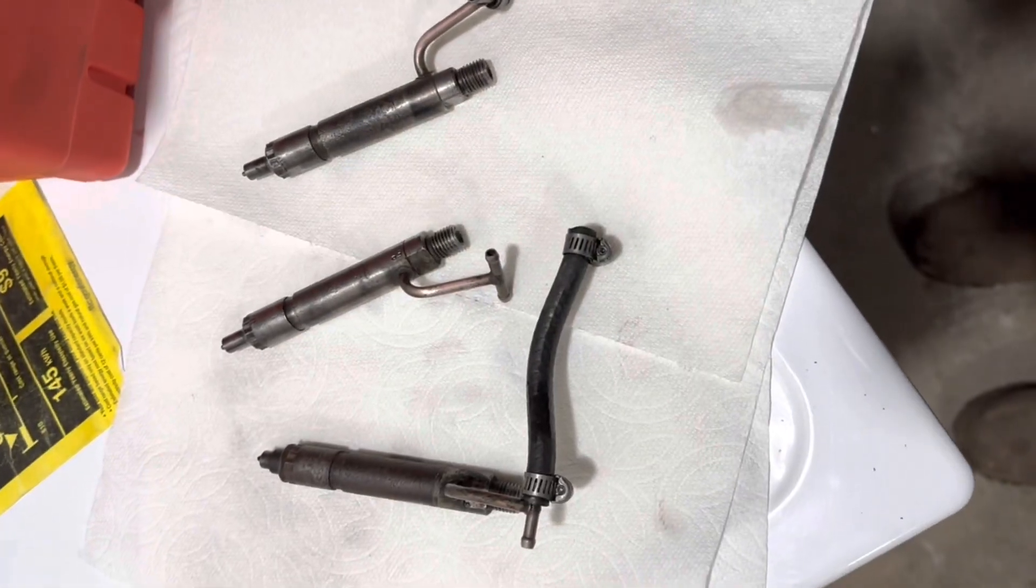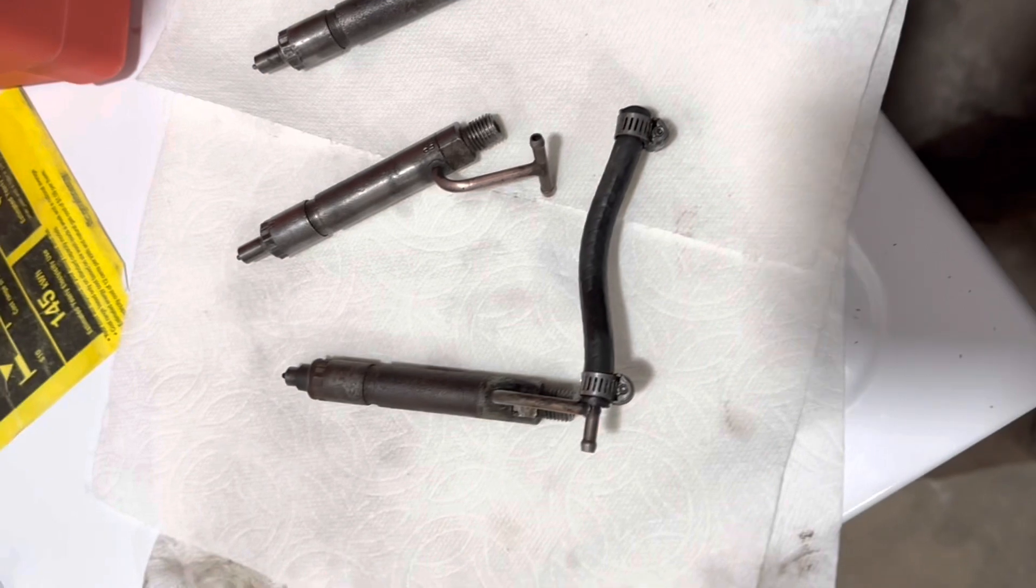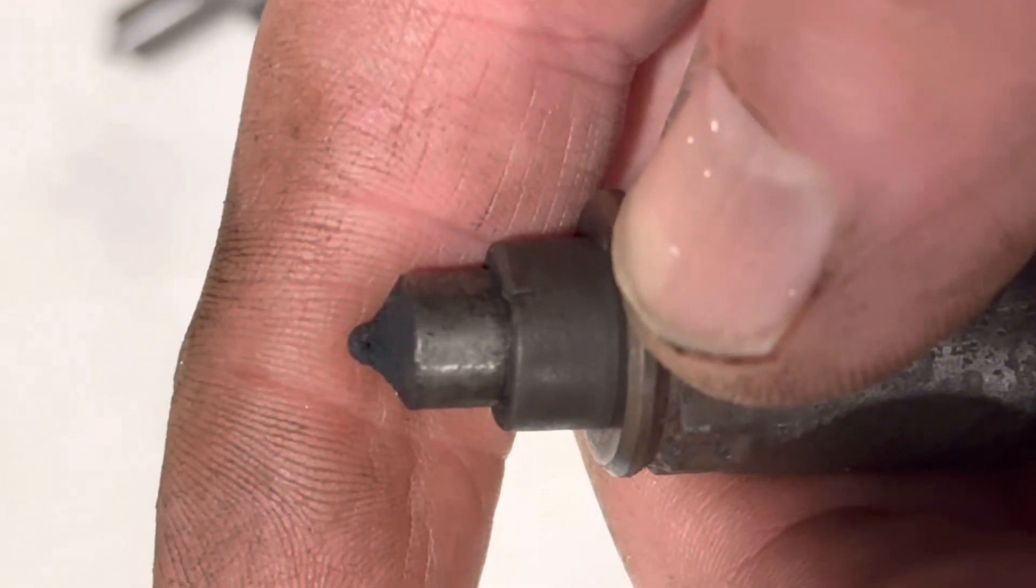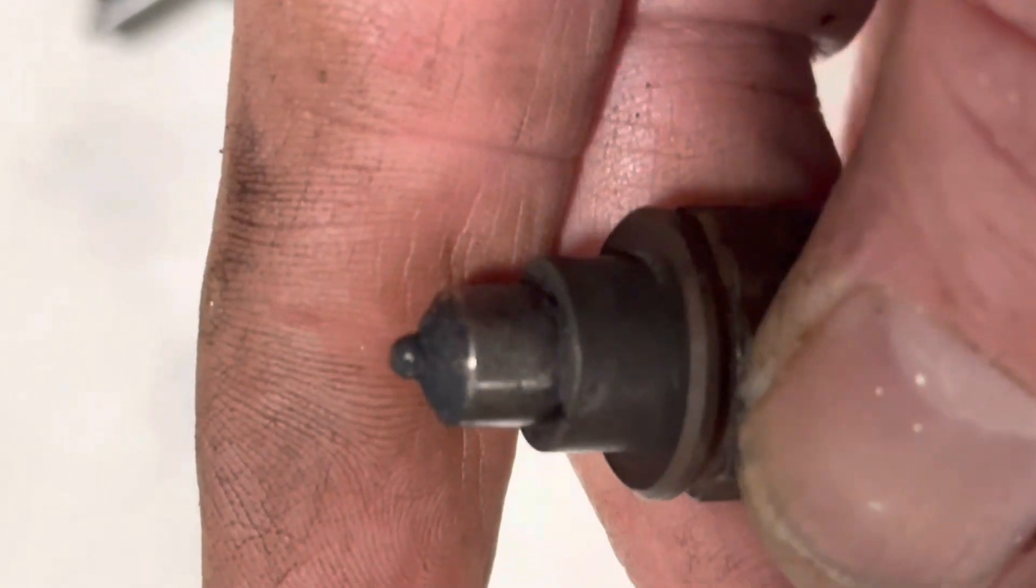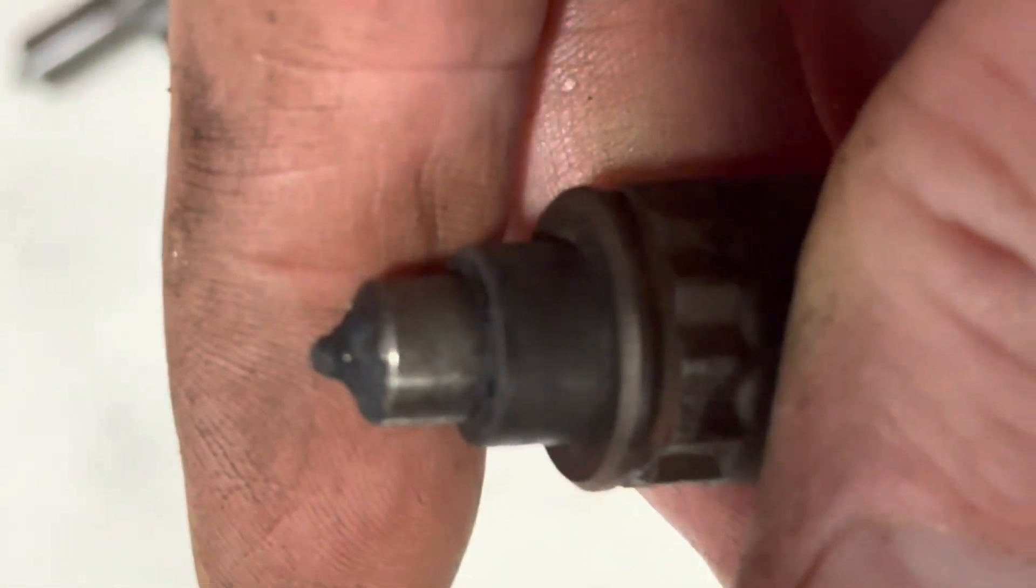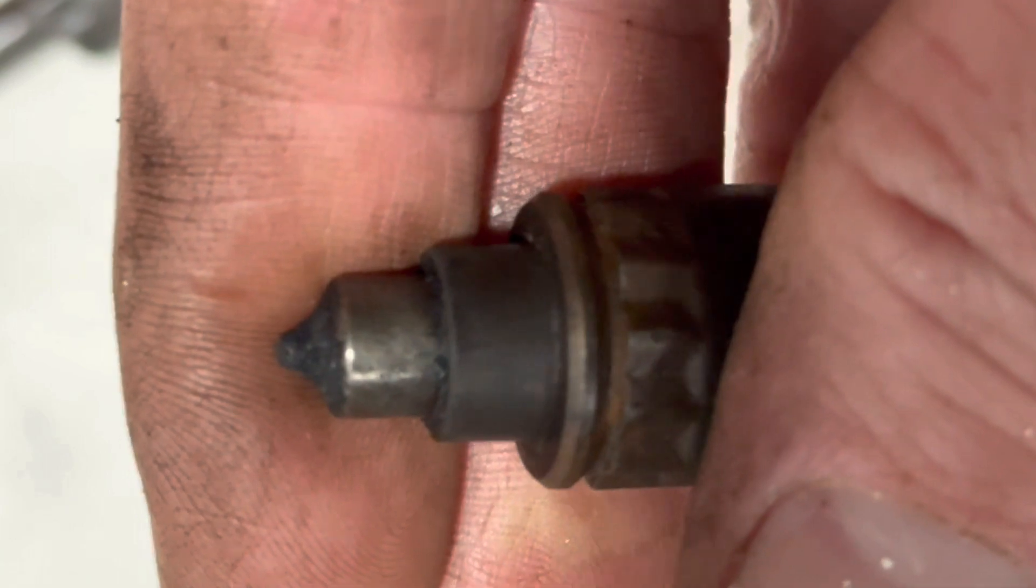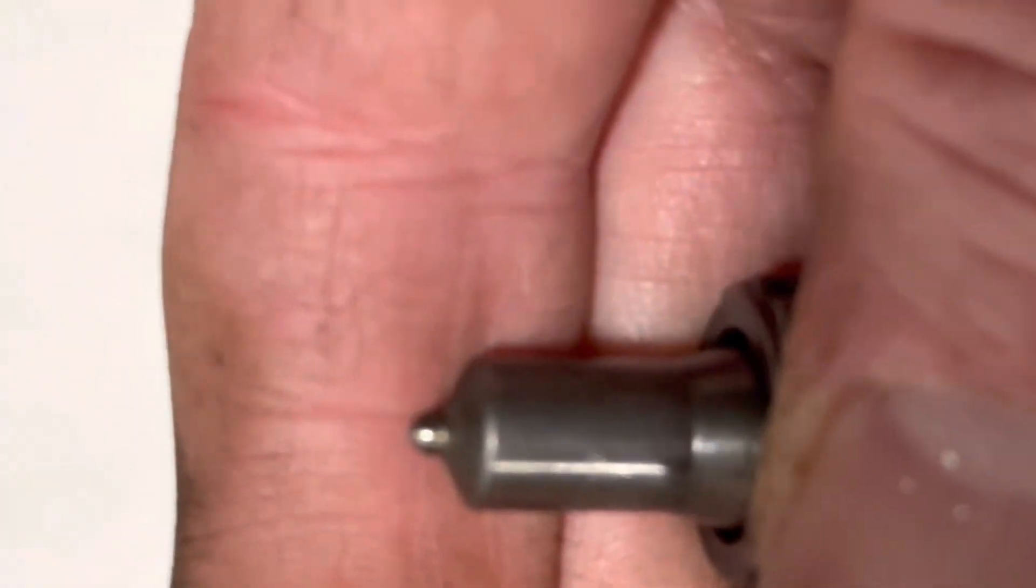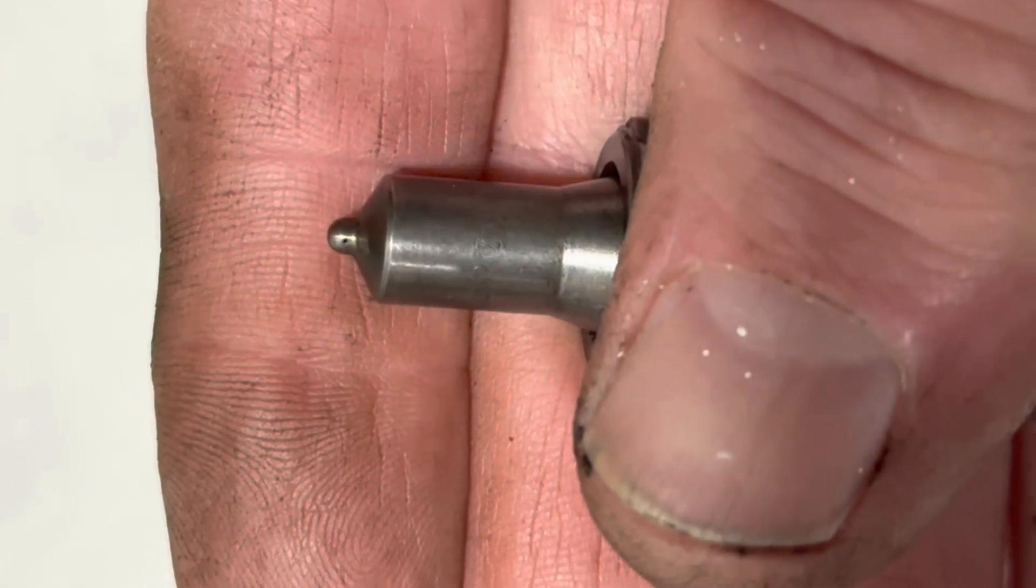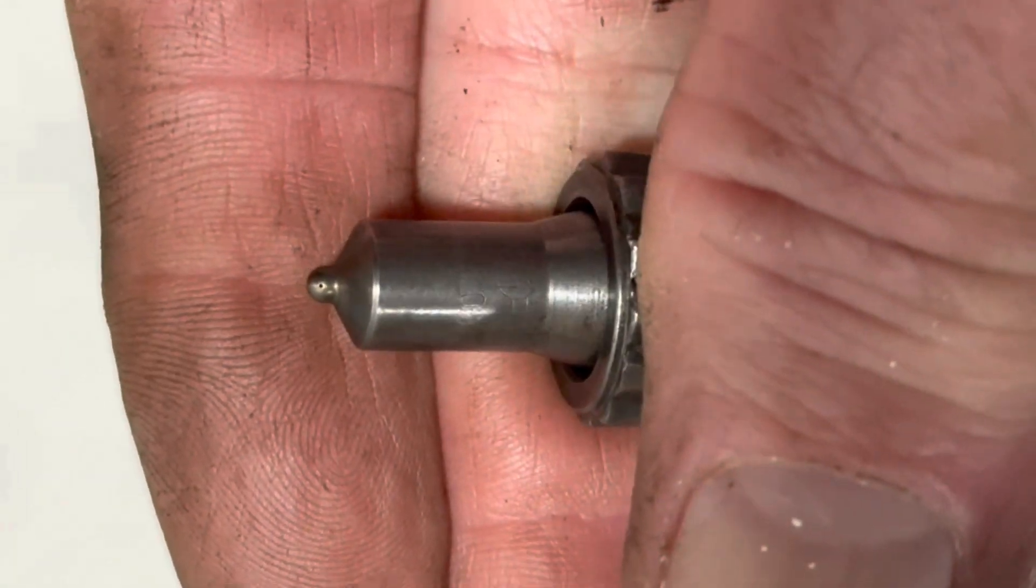Okay, when you pull your injectors you want to get them from looking like this - this one's just been pulled, I can see the holes in the end there - but I'm still not sure how good it's spraying. The trick is to get them that clean. Let's see the little holes.